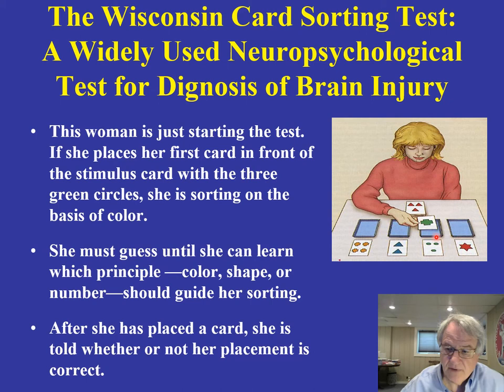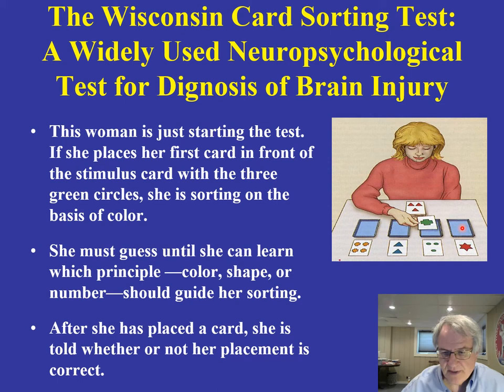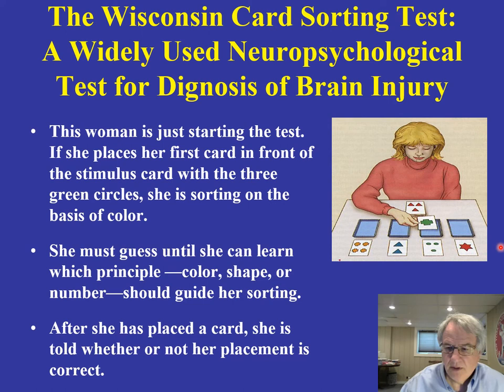She's sorting on the basis of color. The target card you see right here consists of three green circles. She has to guess until she learns which principle — meaning color, shape, or number — guides her in her sorting. The examiner is going to periodically change the mode: sometimes it's going to be color, sometimes shape, sometimes number. In this case, she's placing it in this tray and the examiner would say 'correct.'